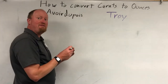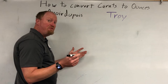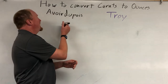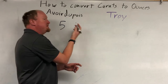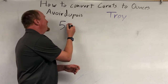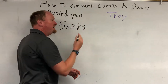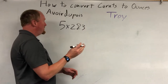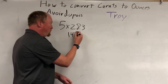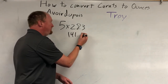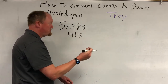So we're gonna start out with the avoirdupois system. Now, carats are one-fifth of a gram. So there are five carats in a gram, and you may or may not know that there are 28.3 grams in an ounce. So you multiply them together, you get 141.5 carats per ounce.